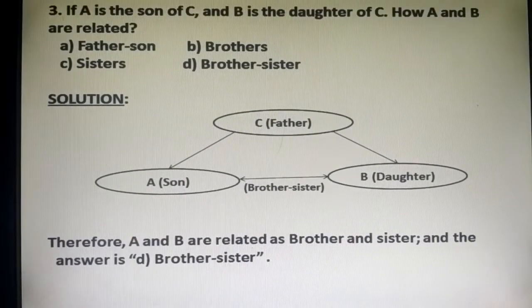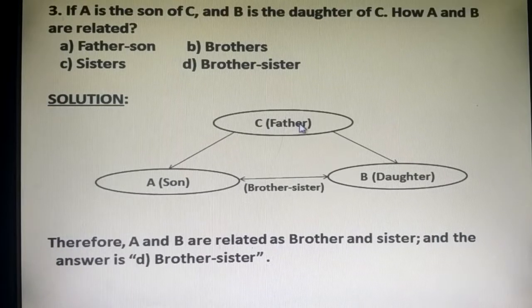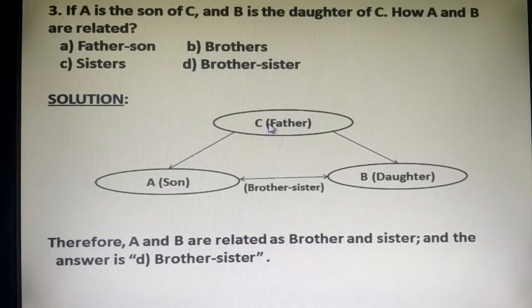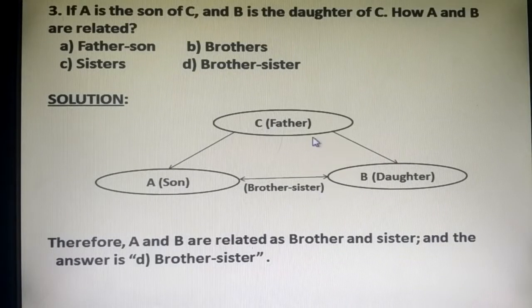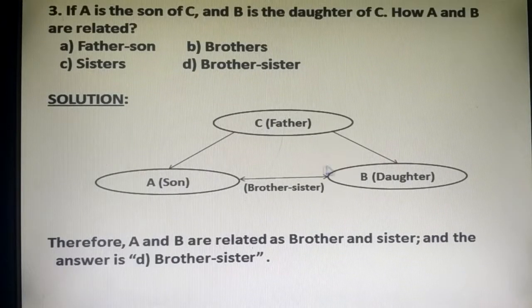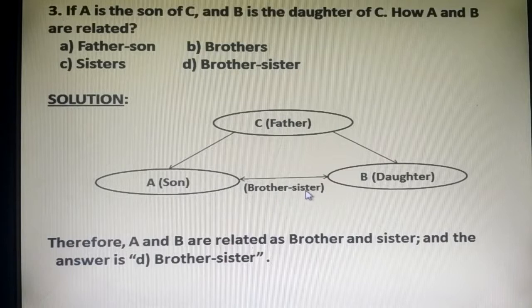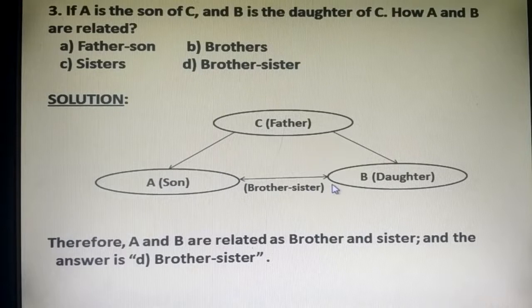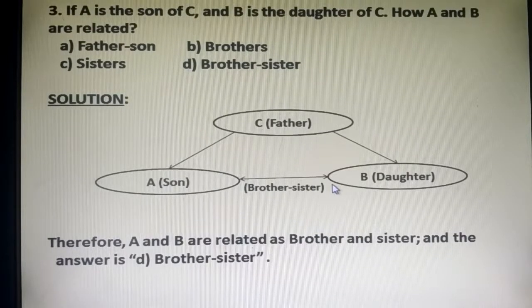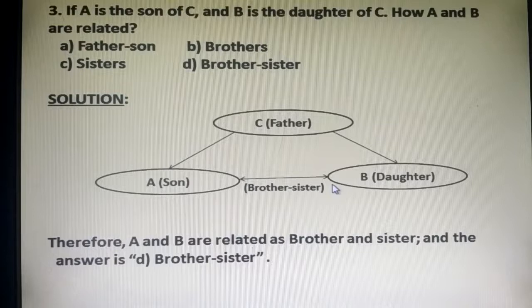If A is the son of C, and B is the daughter of C, so what is the relation between A and B? Brother and sister. If both are his son and daughter, then the relation between them is brother and sister. Therefore, A and B are related as brother and sister, and the answer is D, brother-sister.